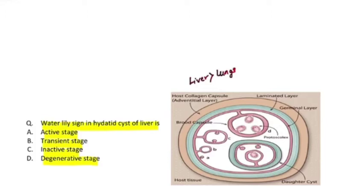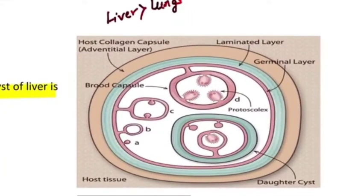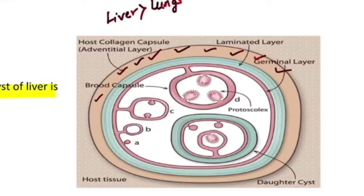Before initiating with the radiological science of hydatid cyst of liver, let's look at the basic structure of the hydatid cyst, which consists of a three-layer structure. The outermost layer is known as the pericyst. This pericyst is not of the parasite but is developed by the host as a response of fibrosis — it is the host collagen capsule.